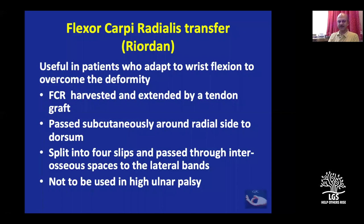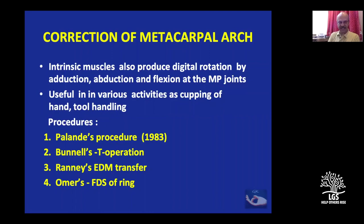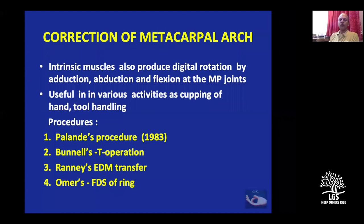If only MCP joint flexion is needed, insert into the A1 pulley. If some IP joint extension is also needed, insert into the lateral bands. If more IP joint extension than MCP joint flexion is needed, insert more distally to the dorsal PIP region. The more distally you insert, the more IP joint extension you get; the more proximally you insert, the more action on the MCP joint.